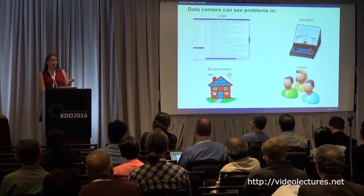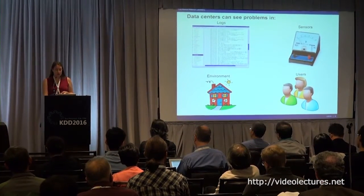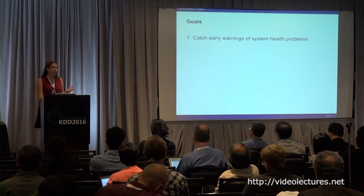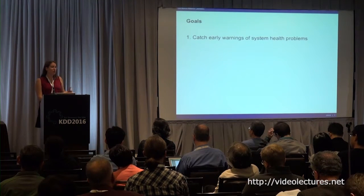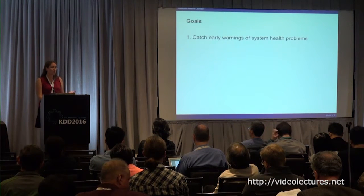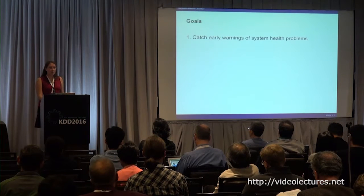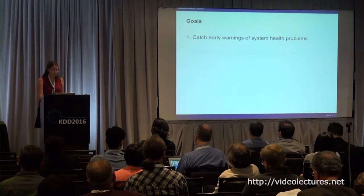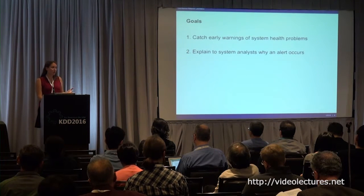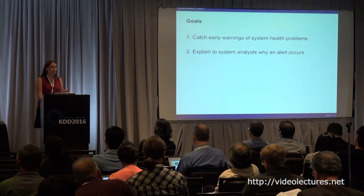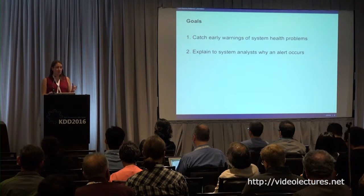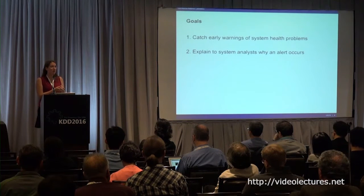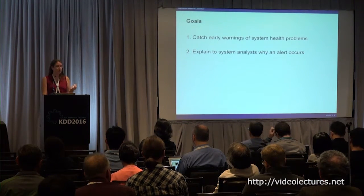In this talk, I'm specifically going to look at anomaly detection for the sensor data on these machines. Some of our goals are to catch early warnings of any kind of system health problem. An unusually high temperature on a CPU could mean the workload is too heavy, something wrong with the hardware, or a variety of other things. We'd also like to be able to explain to the analyst why we're alerting on something specific, so we're going for an interpretable solution.